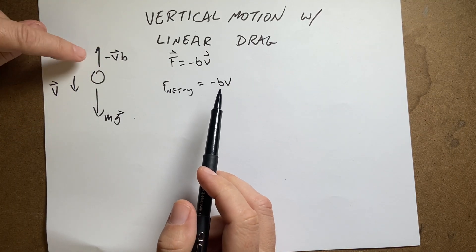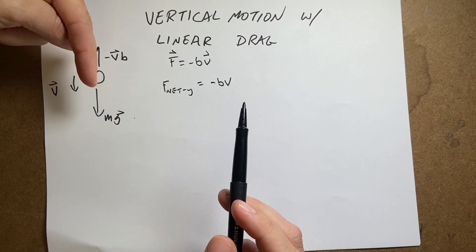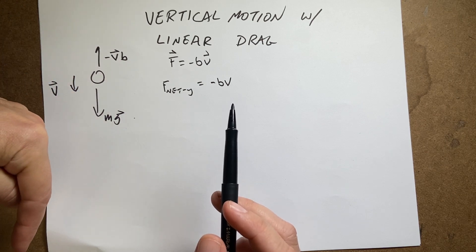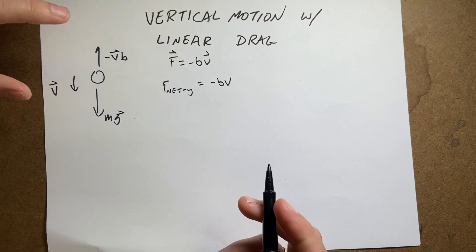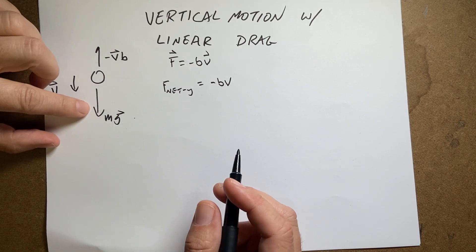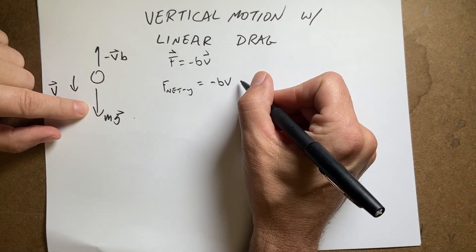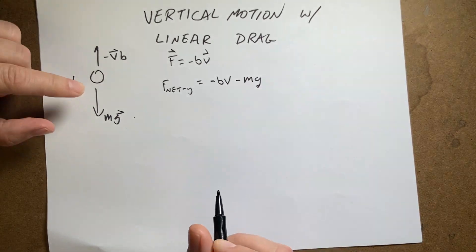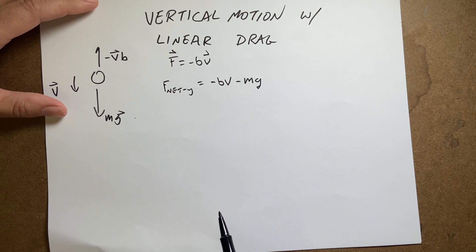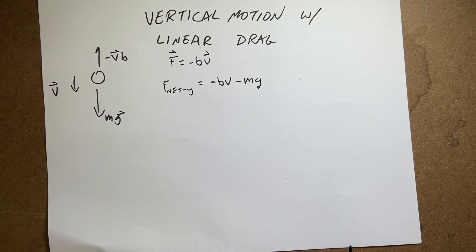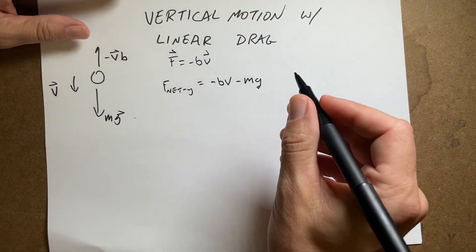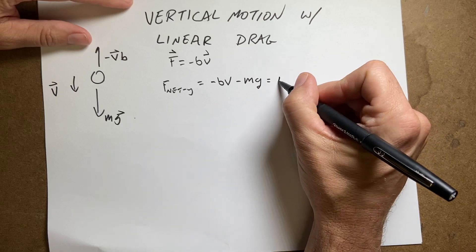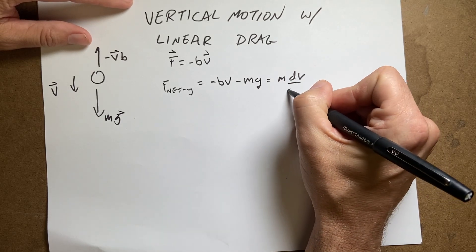That force is negative because if the ball's moving down, the velocity is negative in the negative Y direction, so that negative sign does need to be there. And then I have the gravitational force in the Y direction, which would be negative MG. So those two forces are in different directions. And that's going to be equal to M dV/dt.